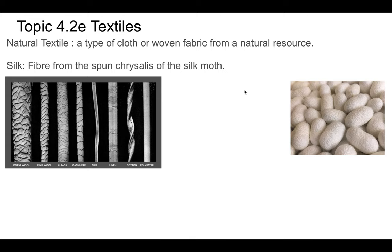Silk is spun from silkworm cocoons. The silk moth's caterpillars spin a very long fiber from their abdomen, and that's what silk looks like.